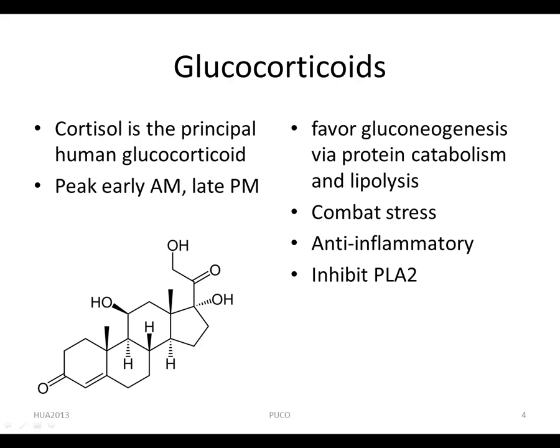Cortisol is the principal human glucocorticoid. Normally, its production is diurnal, with a peak early in the morning followed by a decline and then a secondary smaller peak in the late afternoon. Factors such as stress and levels of circulating steroid influence secretion.